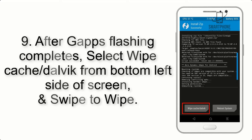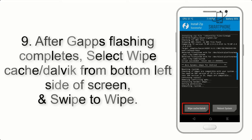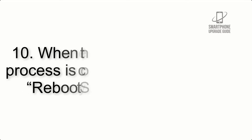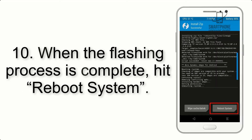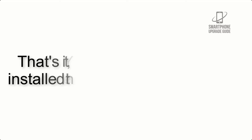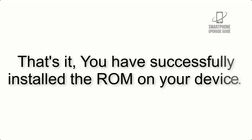Step 9: After GApps flashing completes, select Wipe Cache and Dalvik from the bottom left side of the screen and swipe to wipe. Step 10: When the flashing process is complete, hit Reboot System. That's it — you have successfully installed the ROM on your device.